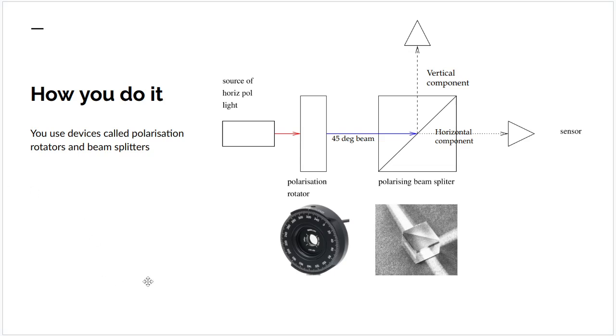Well, you use devices called polarization rotators and beam splitters. So we've got a source of polarized laser light coming in here. We put it through a polarization rotator to rotate it to 45 degrees. We can then separate it out using a polarizing beam splitter into two separate beams, one with the vertical polarization and the other with the horizontal polarization. Standard components. You can buy them off the shelf.